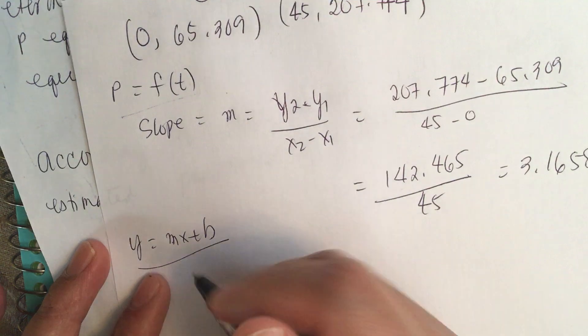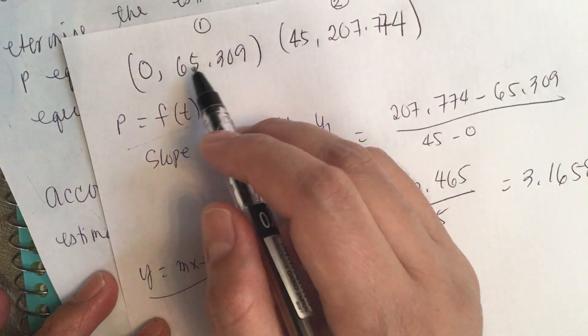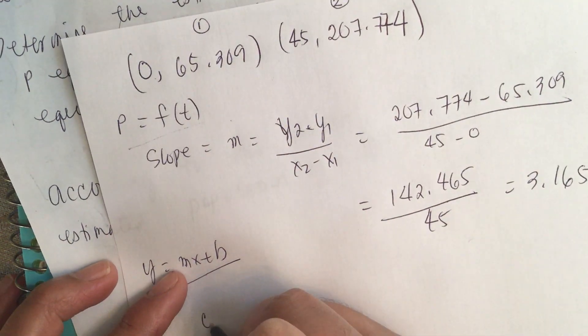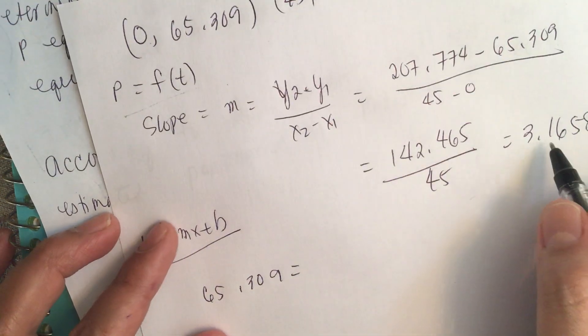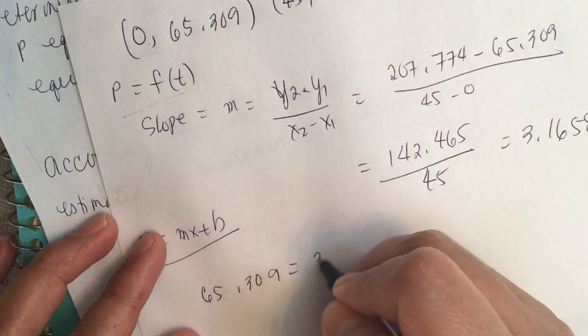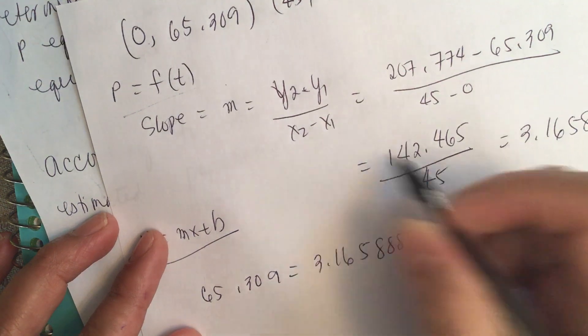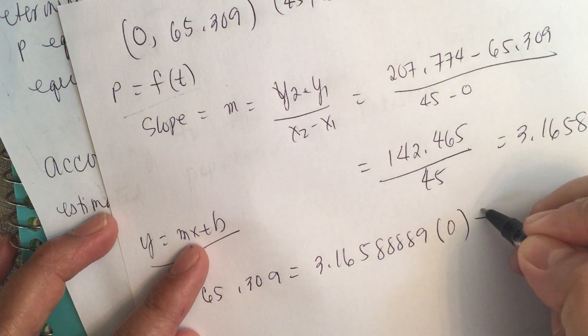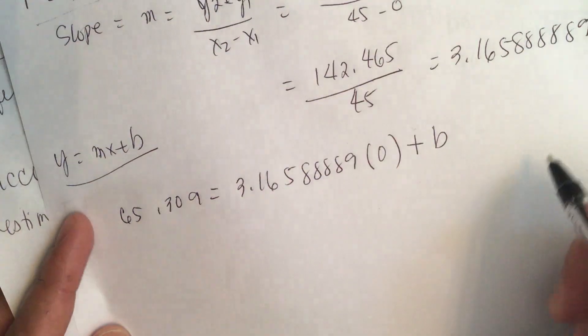Now we have the slope. We can use this point since it's easier to use because it has zero. We have 65.309 is equal to the slope, which is 3.165888889 times T, which is zero, plus the B-intercept because they're using P.